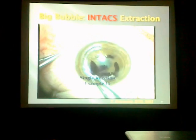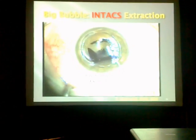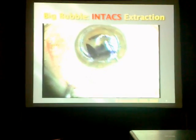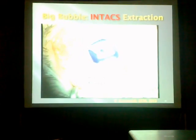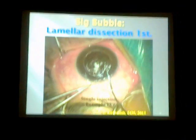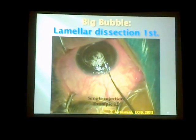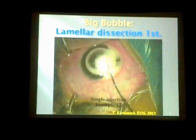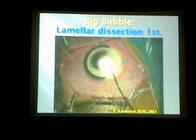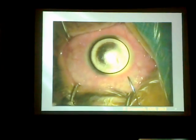This is an example of a patient after failure of intacs. I also performed DALK for him and obtained the big bubble from the first injection. Some surgeons prefer to do lamellar dissection first, and then inject into the stroma to be near the Descemet's membrane, to obtain the big bubble — again, from the first injection, with its characteristic well-defined circular appearance.